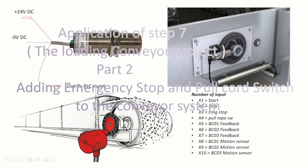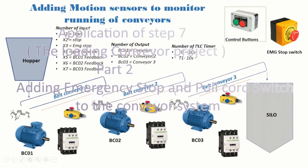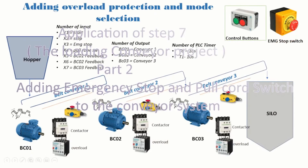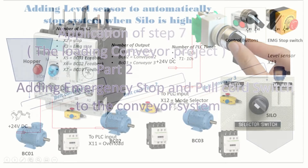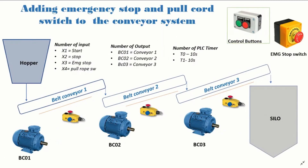Hello, great YouTubers! Welcome back. In today's part, we'll be adding emergency stop and pull rope switches to our conveyor system. Let's get started. So we will have a look at our conveyor system right here. Just as we did in the last tutorial, we have the hopper and all our conveyors. The new things we are introducing are the emergency pull rope switch and the emergency push button. Why do we need these in our conveyor system?